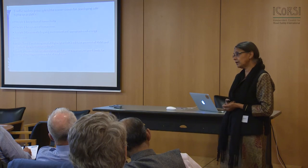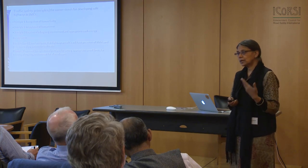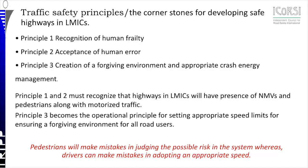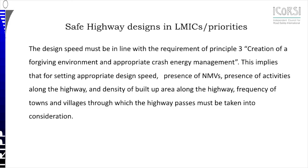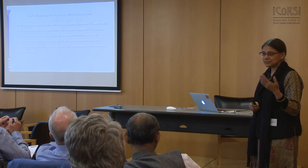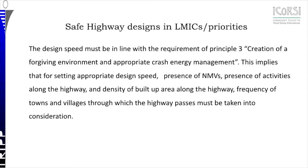Principle 3 becomes the operational principle for setting appropriate speed limits and ensuring a forgiving environment for all road users. We cannot simply say that because we have a national highway, we cannot have a speed limit of 30 kilometers per hour on certain segments. Pedestrians will make mistakes in judging possible risk in the system, while drivers can make mistakes in adapting to appropriate speed. So the design speed must be in line with the requirements of creating a forgiving environment and appropriate crash energy.